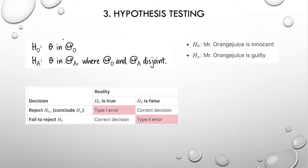To prove that a hypothesis is true or false with absolute certainty, we would need absolute knowledge. That is, we would have to examine the entire population.